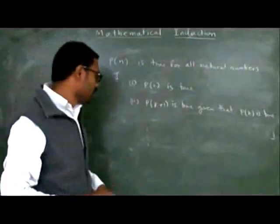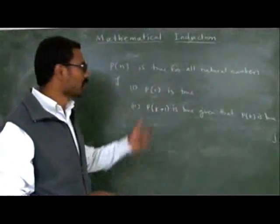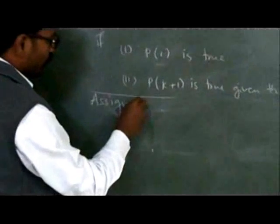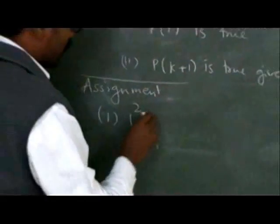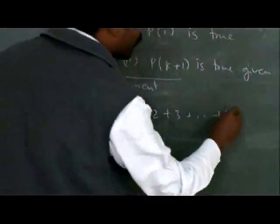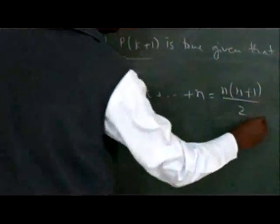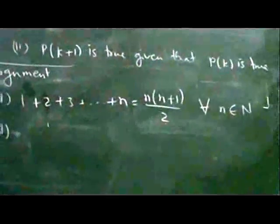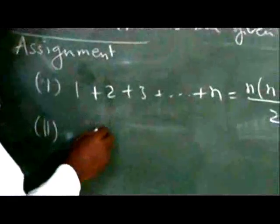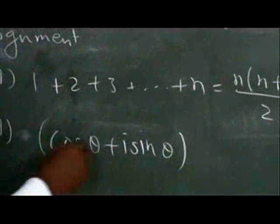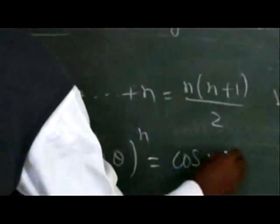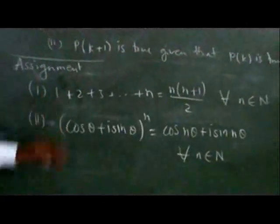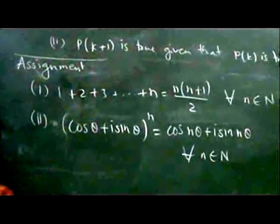I think from this you will be able to prove many other such problems. Here is some assignment to try: prove that 1 + 2 + 3 + ... + n = n(n+1)/2 for all natural numbers. You can also try to prove that (cos θ + i sin θ)^n = cos nθ + i sin nθ for all n belonging to the natural numbers. Try these two problems, and we will see the next concepts in the next lecture. Thank you.